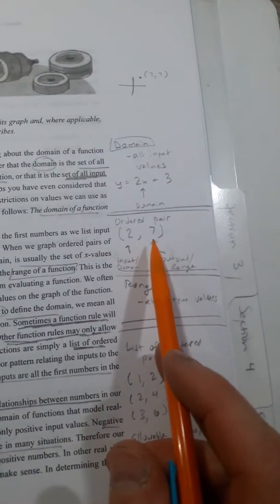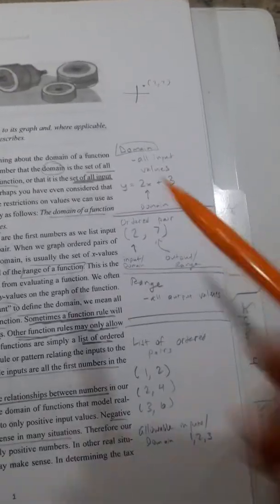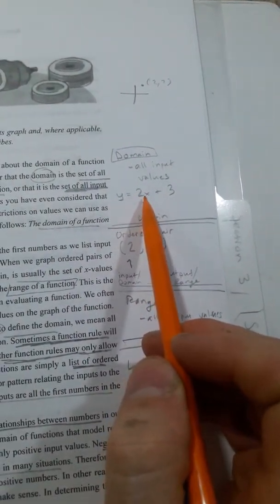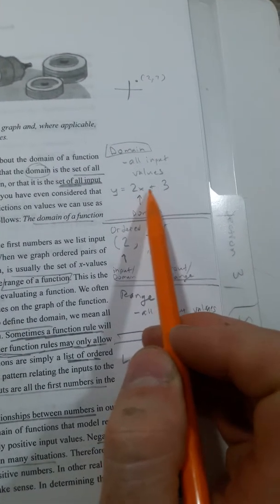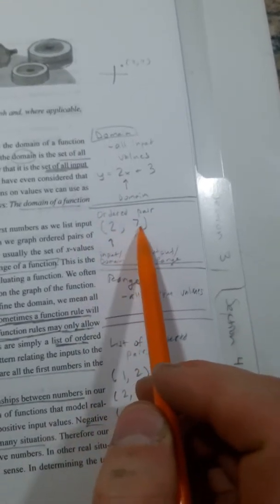Ordered pair of numbers. When x is 2, y is 7. So that would be up here with this function. We'll plug in a 2. 2 times 2 is 4. 4 plus 3 is 7. So that's just what an ordered pair is.